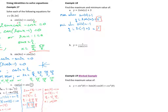For a reciprocal function, max and min swap. So the minimum of 1/(2sinx + 3) = 1/5, occurring where the original function is maximum. The maximum = 1/1 = 1, occurring where the original function is minimum.